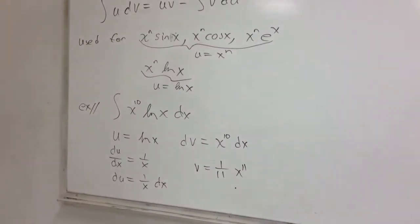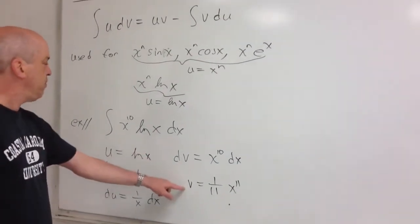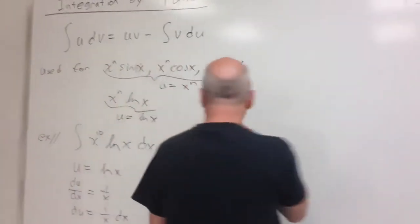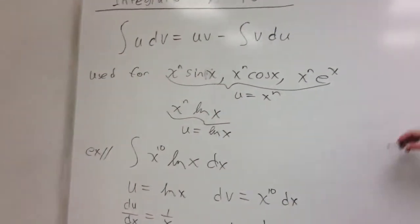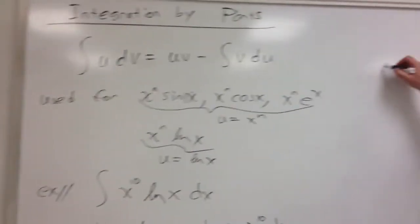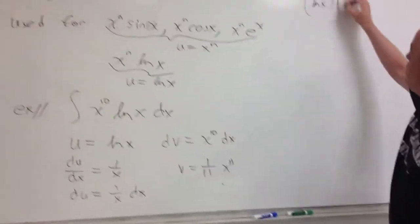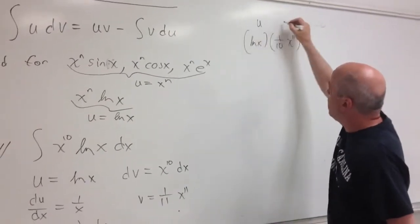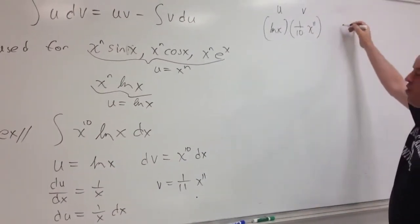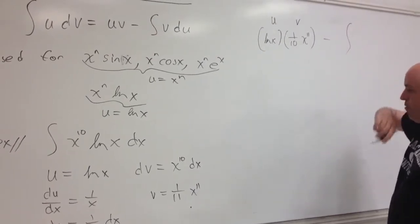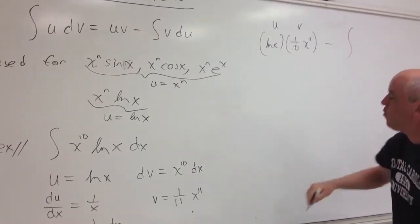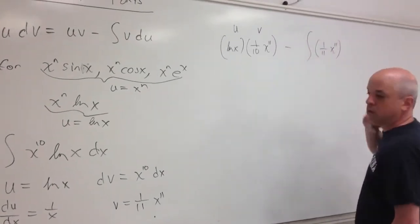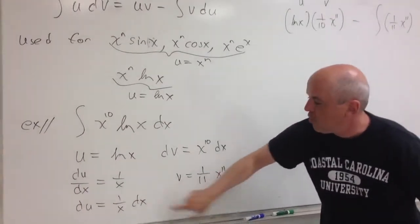Now I have all the little ingredients for the formula. I have my u, I have my v, I have my du. And that's really the only three things we needed here. So what is u times v? u times v is natural log of x times 1 over 11 x to the 11th. That's uv minus integral v, 1 over 11 x to the 11th, du, 1 over x dx.